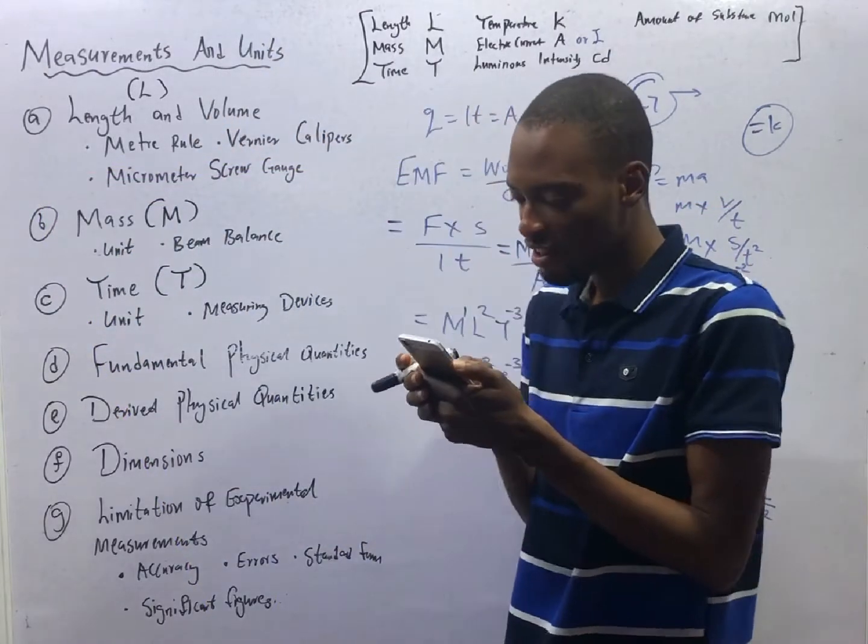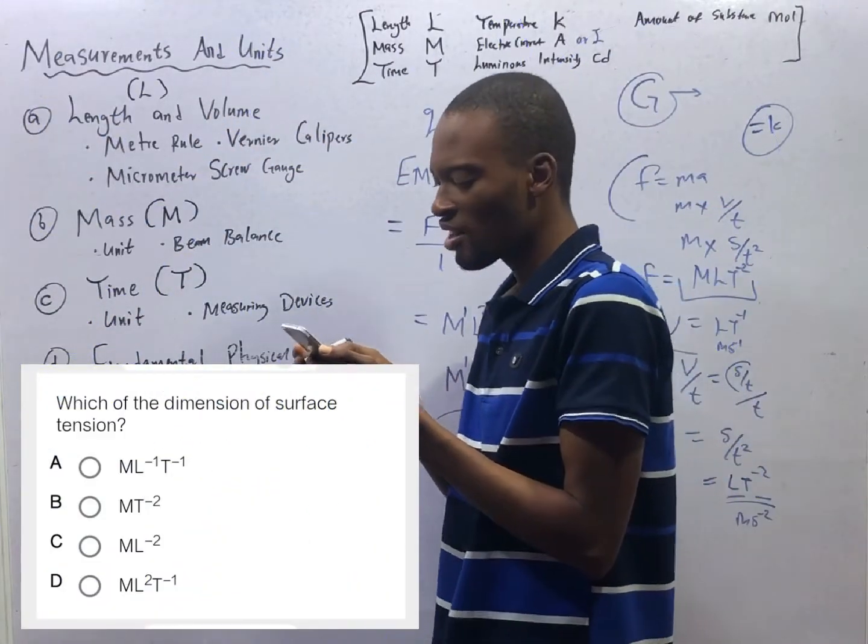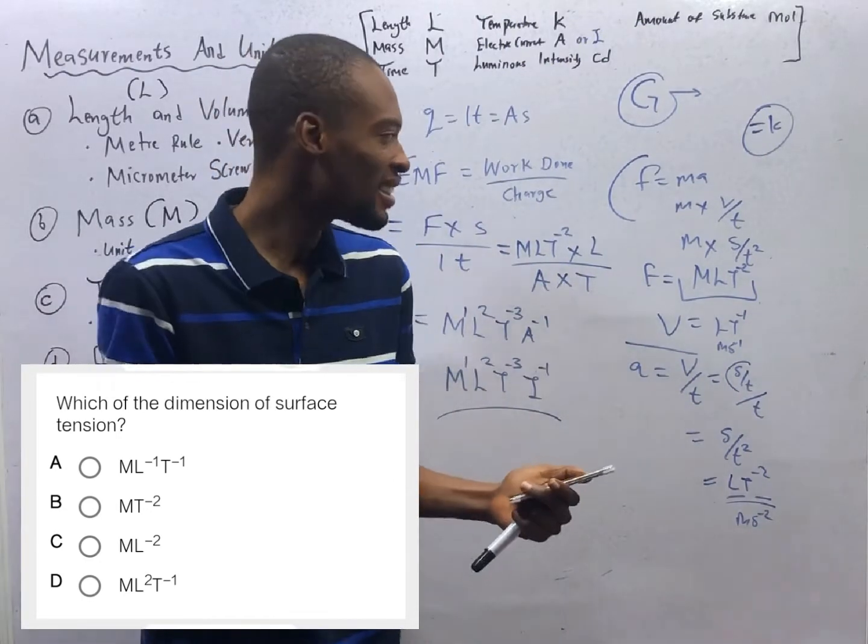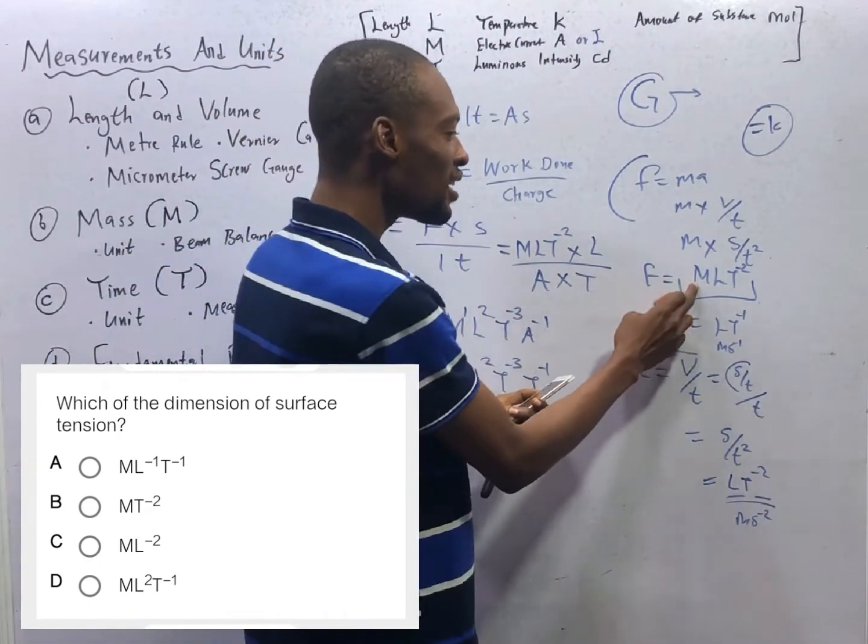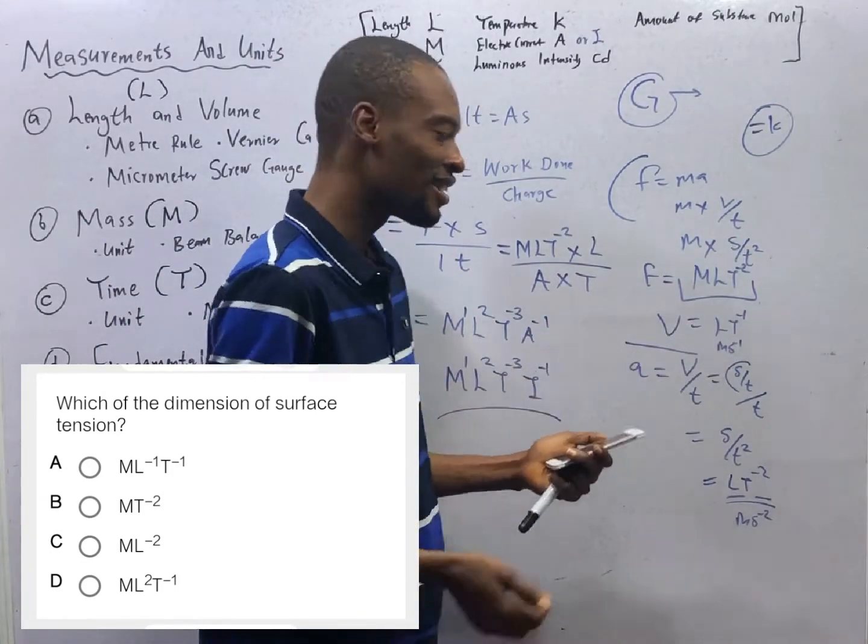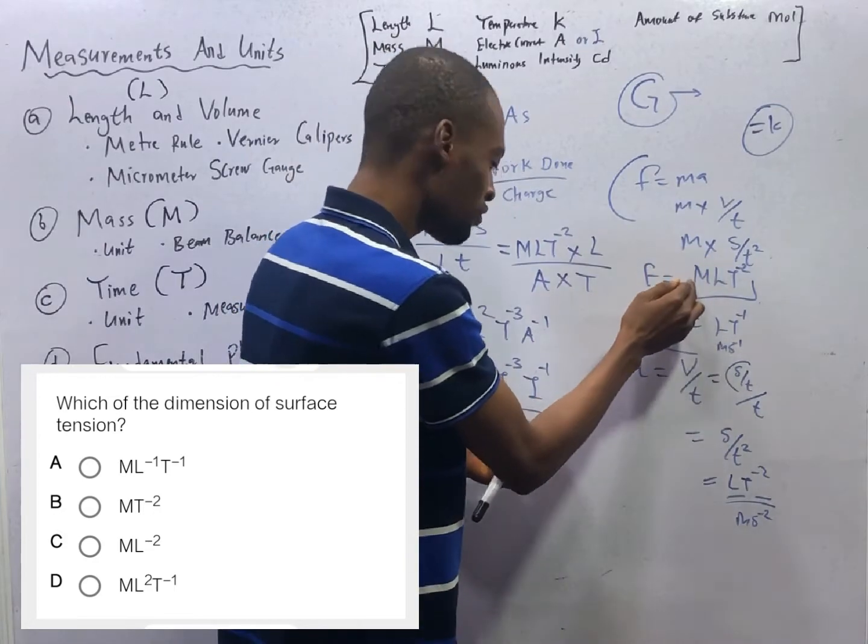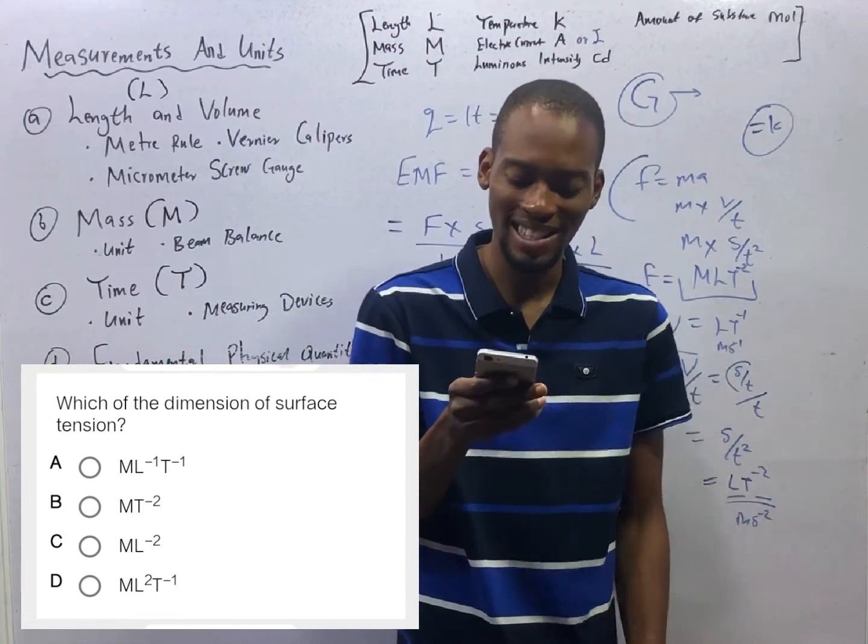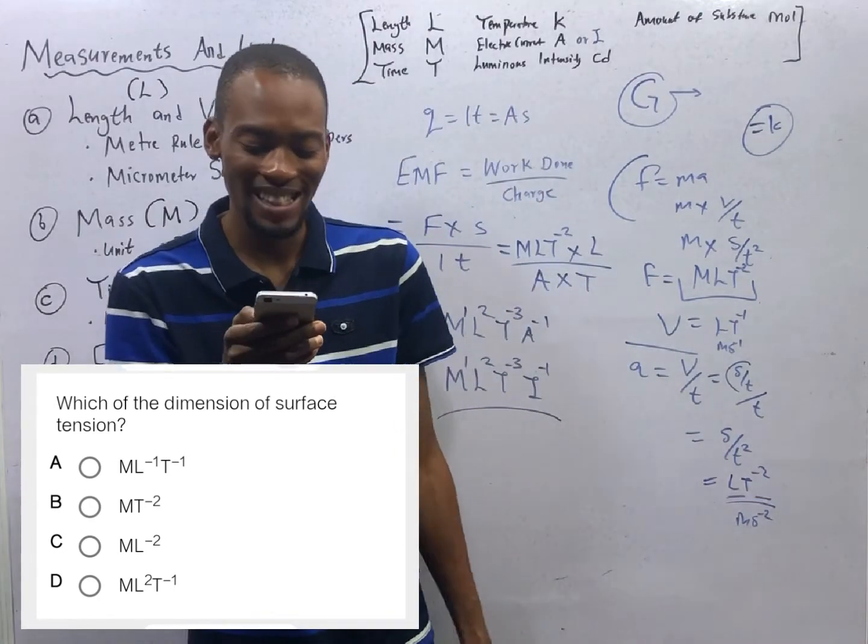What is the dimension for surface tension? Surface tension is force per unit length. Force over length. Force is MLT raised to the power of minus 2. Length is L. So this divided by L. L goes. You are left with MT raised to the power of minus 2. So option B is the dimension for surface tension.